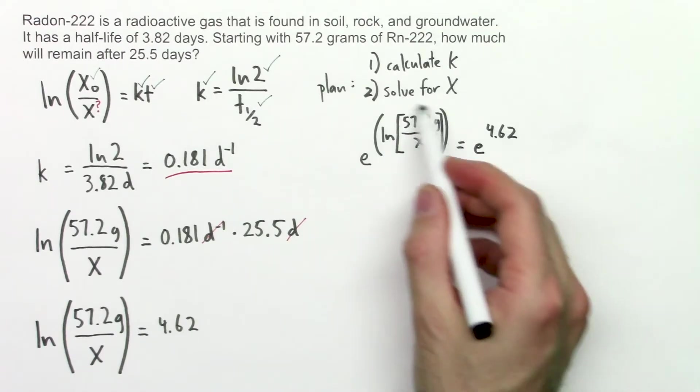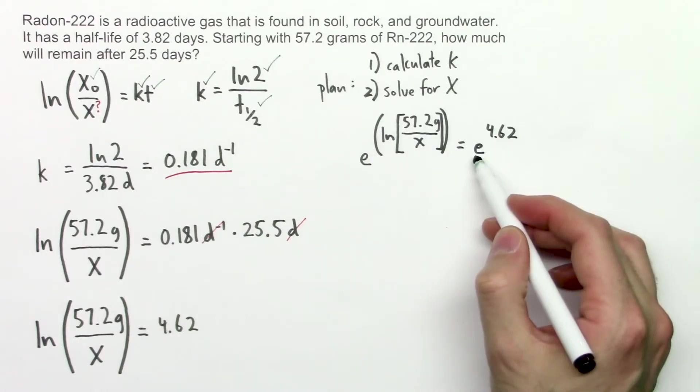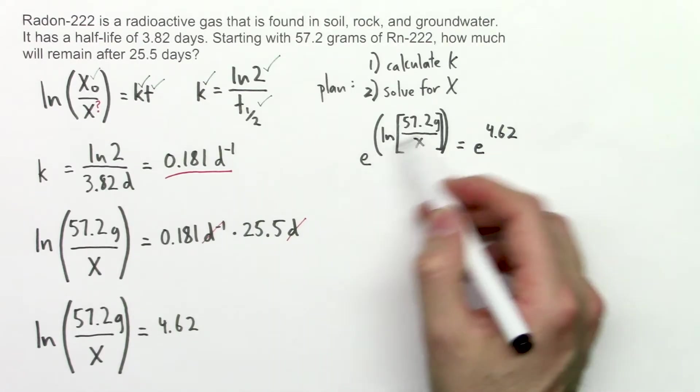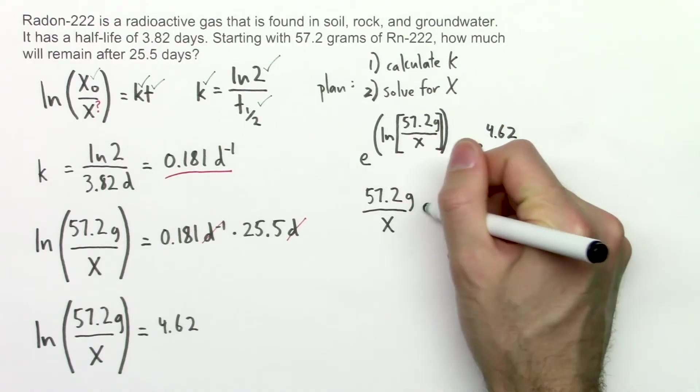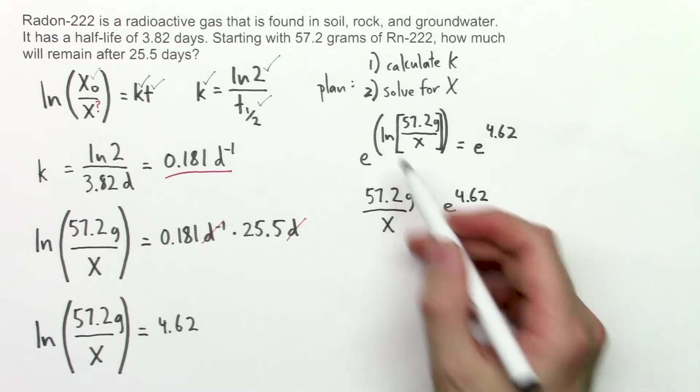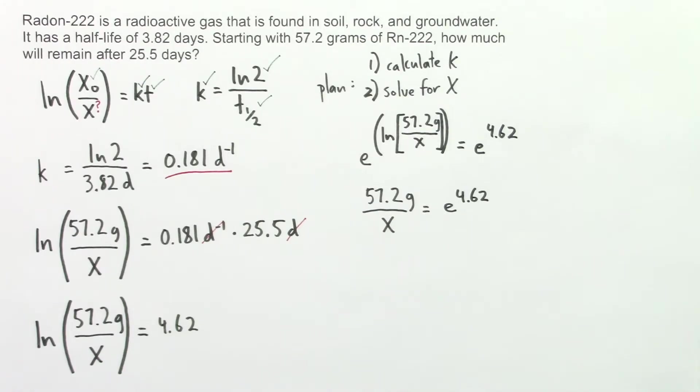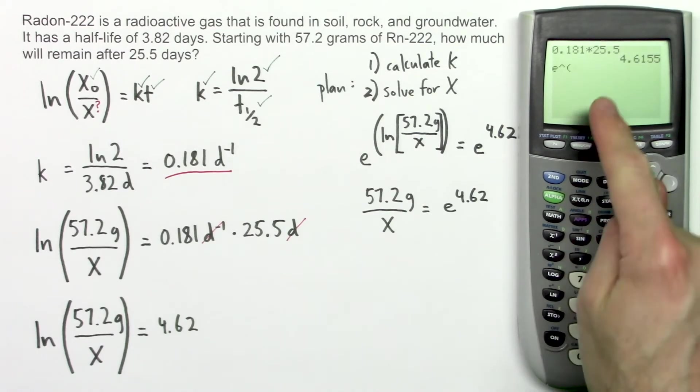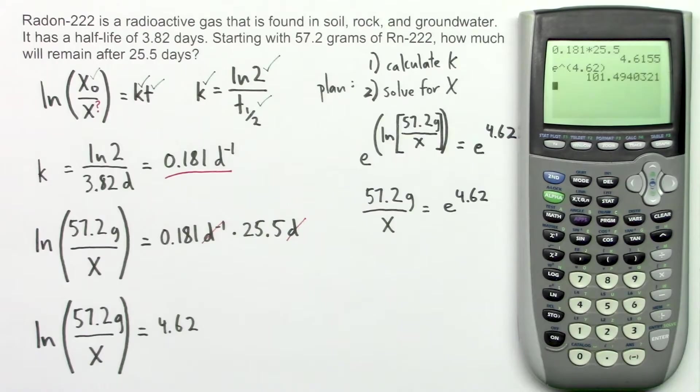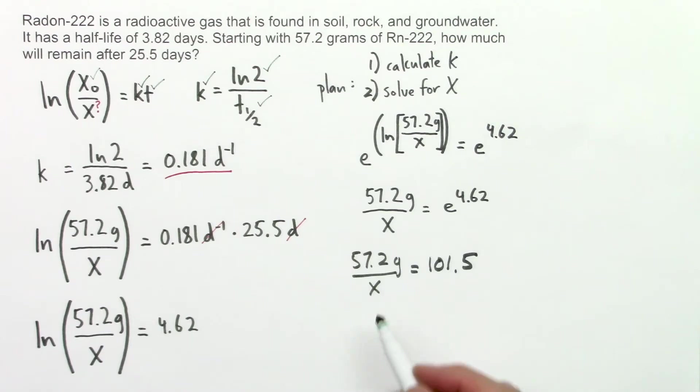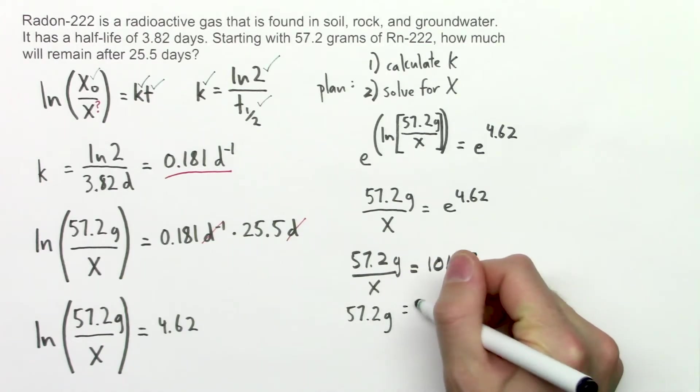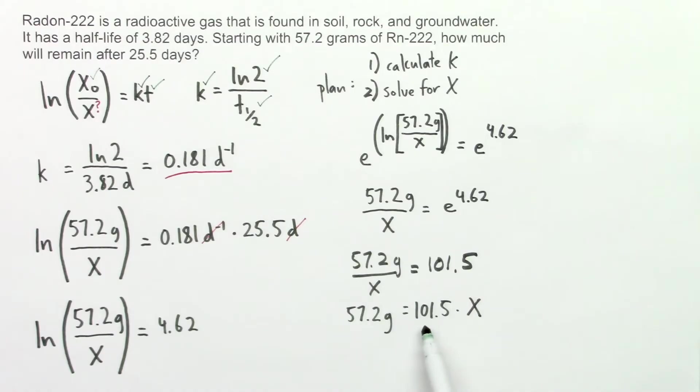Here's what that's going to look like. There you can see we took e, we raised it to this, and then we took e and we raised it to this power here. Raising e to this power removes both e and the natural log. So we'll get this. We got rid of the ln. And now e to the 4.62. That's a number we can calculate. Most calculators have an e to the exponent key. e to the 4.62 gives us 101.5. So we can rewrite this. Now to get x out of the denominator, I'll multiply both sides of the equation by x, giving this. And now I'll divide both sides by 101.5.